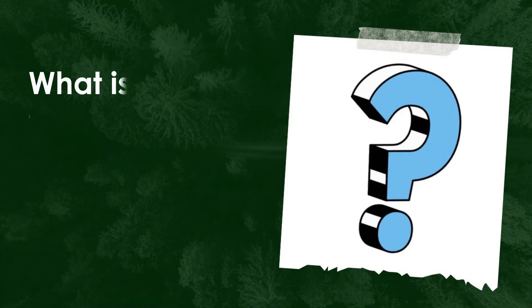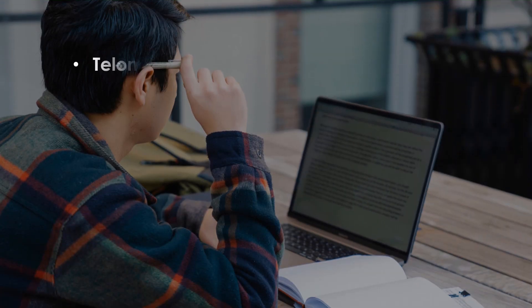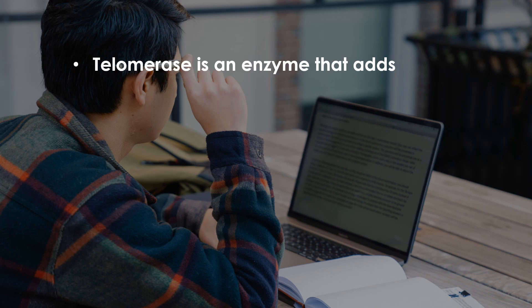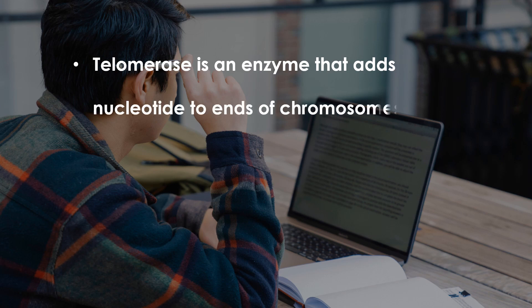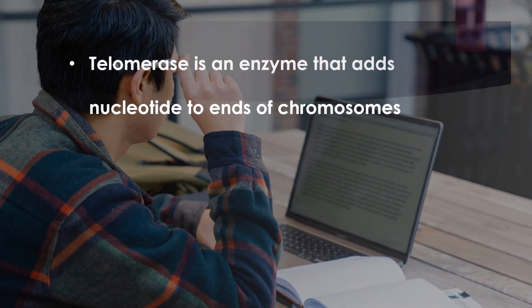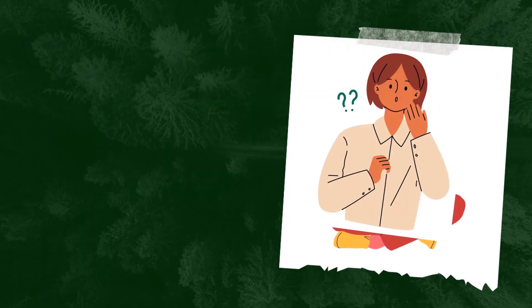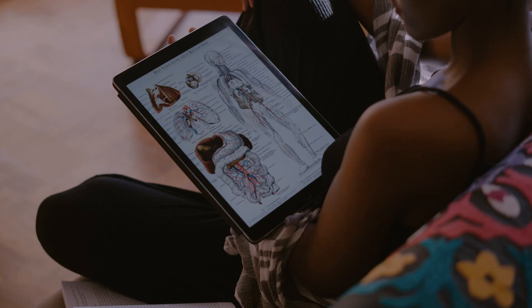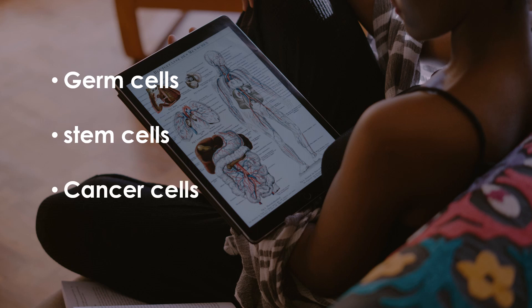What is telomerase? Telomerase is an enzyme that adds nucleotides to the ends of chromosomes. Which cells have telomerase? The cells which are replicating forever — like germ cells, stem cells, and cancer cells — these cells will have telomerase.